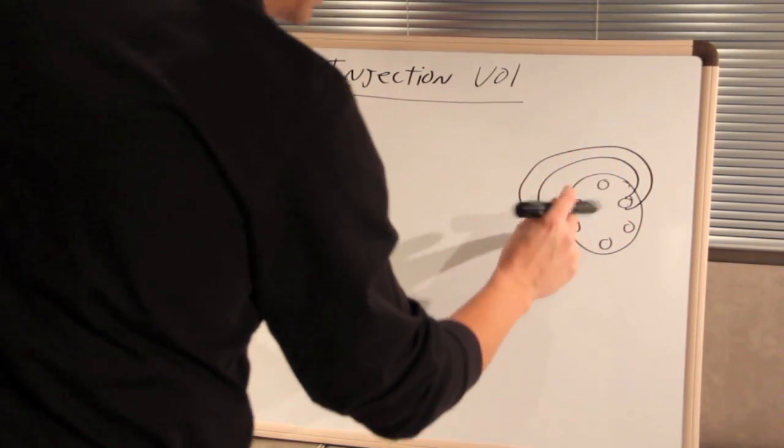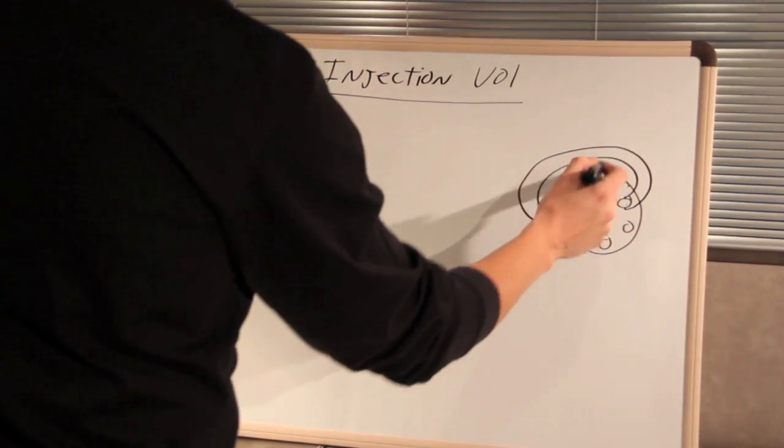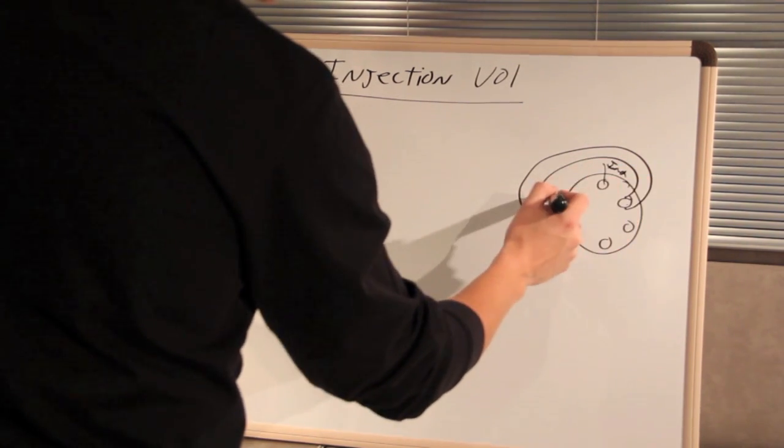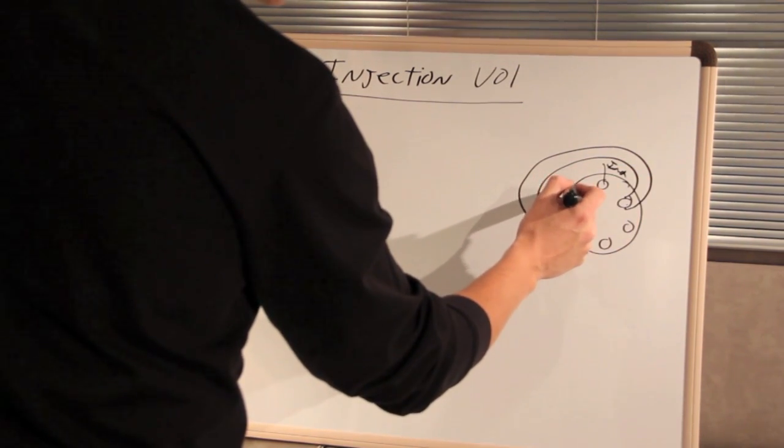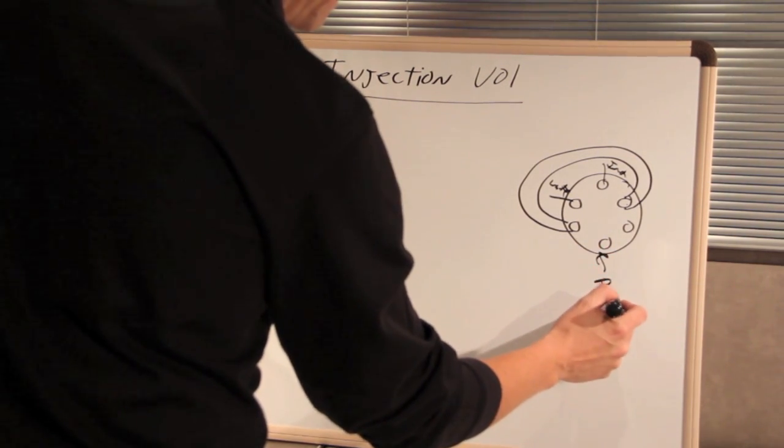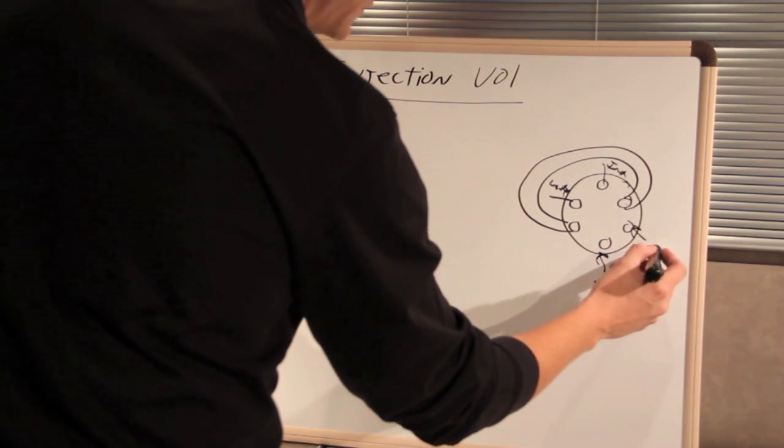So what I'm doing is drawing the sample loop here, and in this case, this will be from your injector, this will be waste, this will be from your pump, and this will be to your column.